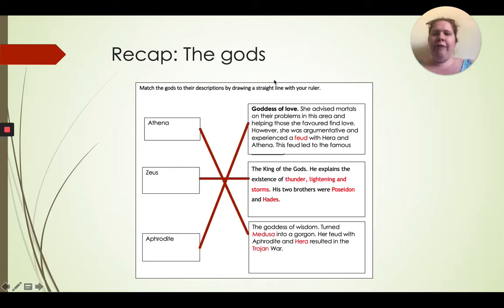Aphrodite should be matched with the first one, goddess of love. This feud led to the famous Trojan War. I do apologize for missing that. Zeus was the king of the gods. You should have filled in thunder, lightning, and storms, and his brothers were Poseidon and Hades. Athena, she turned Medusa into a gorgon. Her feud with Aphrodite and Hera resulted in the Trojan War.